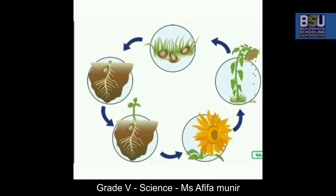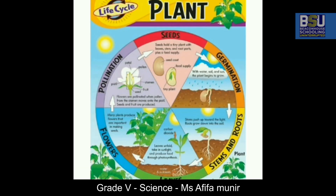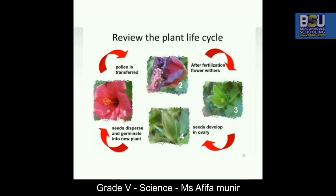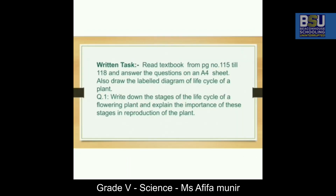Now for a quick recap: the seeds are sown, then comes germination, then stems and roots are formed, then leaves grow, then flowers grow, then pollination takes place, then the seed forms again, and then the process of germination takes place once more. So it is the life cycle of the plant.